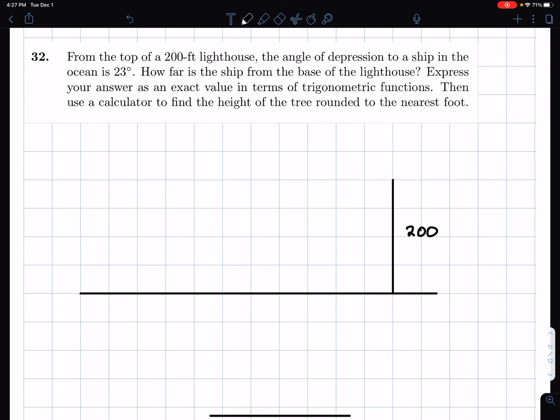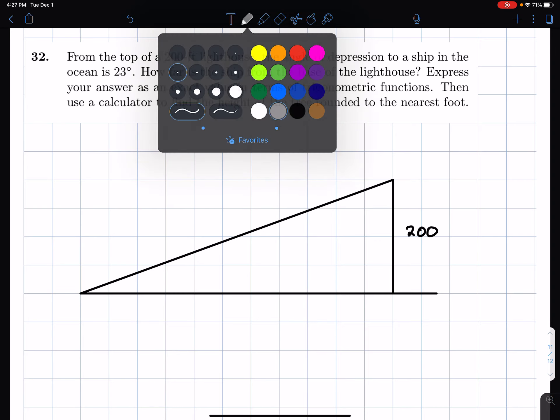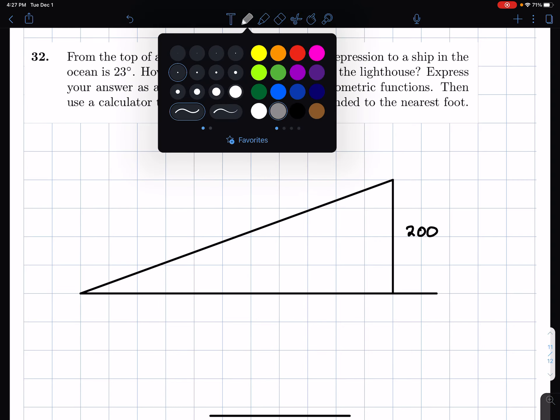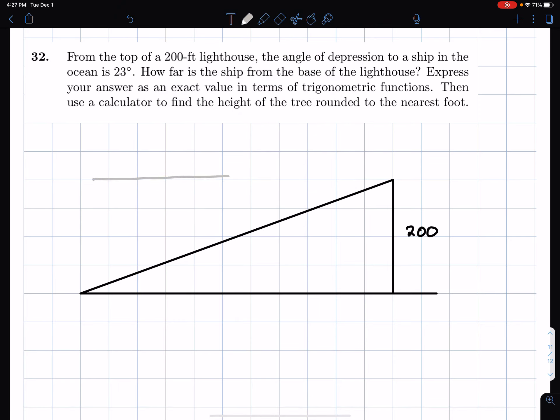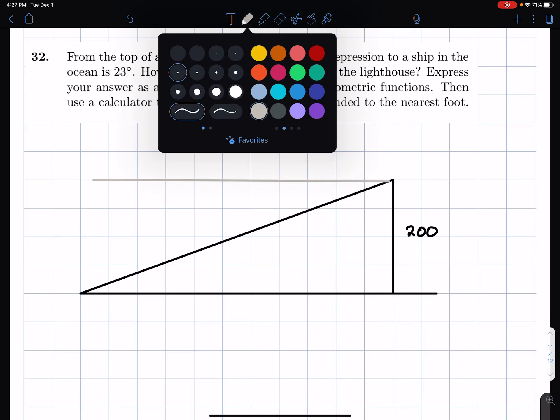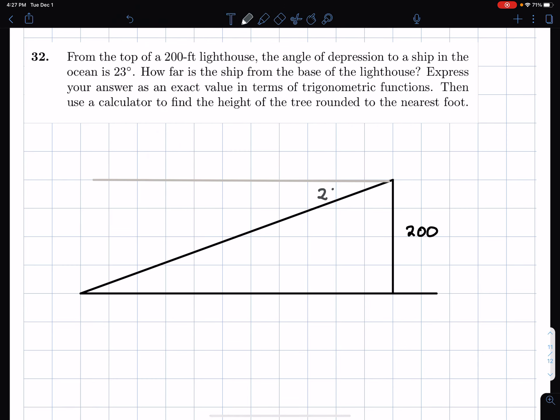The angle of depression to a ship in the ocean is 23 degrees. And I think that's actually not that bad. What I mean by the angle of depression, that means the angle that we form with the horizon is 23 degrees. So just write that down, 23 degrees.